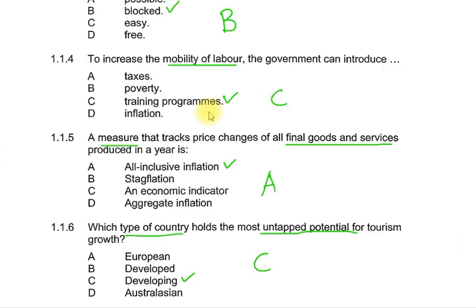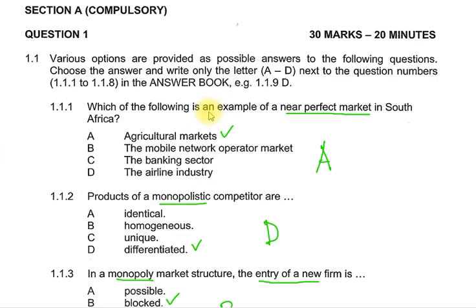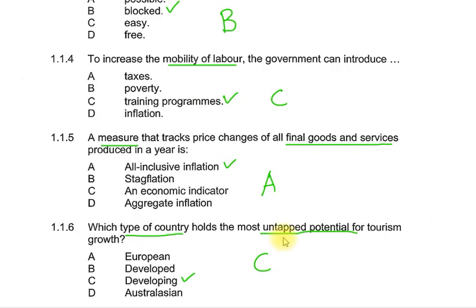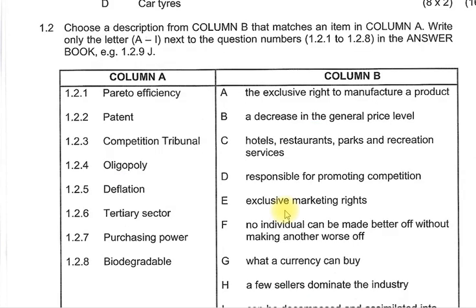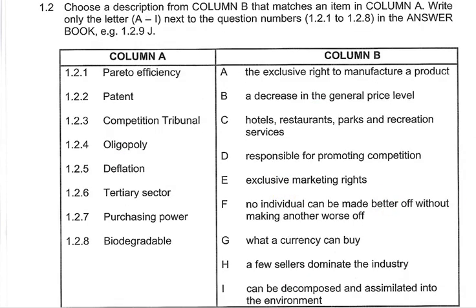Just to confirm, going back: we've got A, D, B, C, A, two C's, two B's, and two D's. All right, without wasting any time, Grade 12, we move on to 1.2.